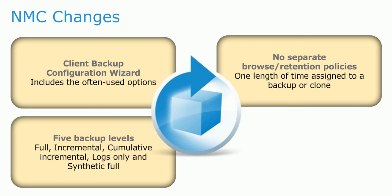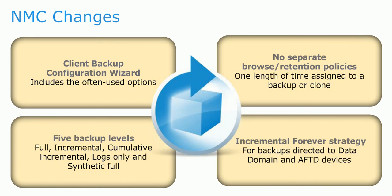The choices in earlier versions of NetWorker, such as levels 1 through 9 and incremental synthetic full, are no longer available. For data domain and advanced file type devices, or AFTD, a user can create an incremental forever strategy. If no full backup exists, a full backup will be performed first, followed by incrementals. For AFTD, backups will automatically be promoted to full after every 38th incremental.